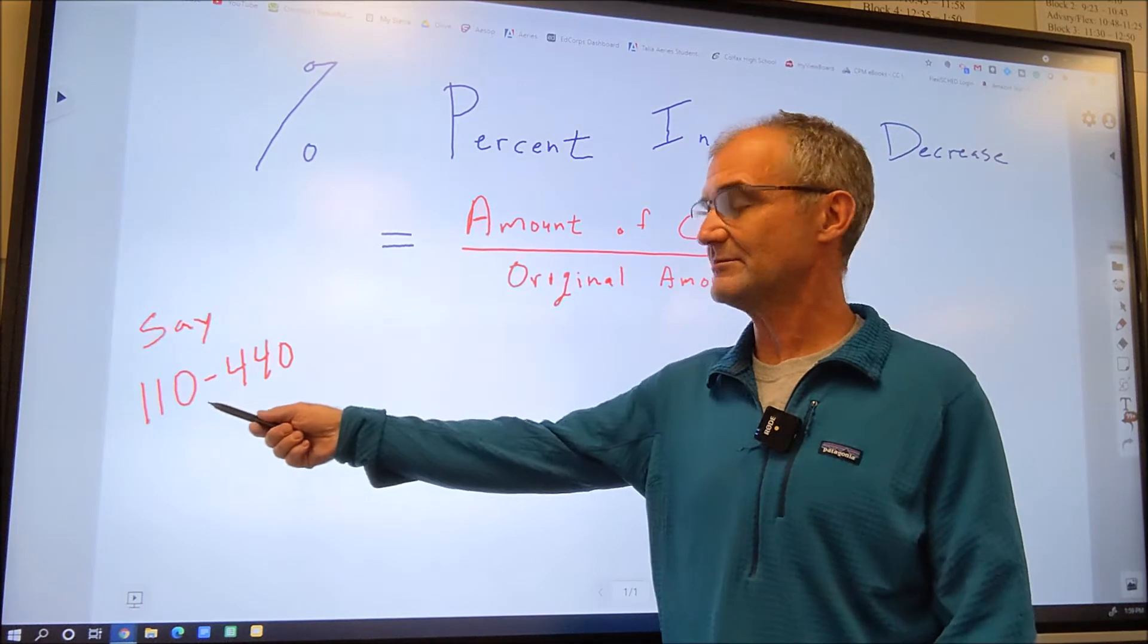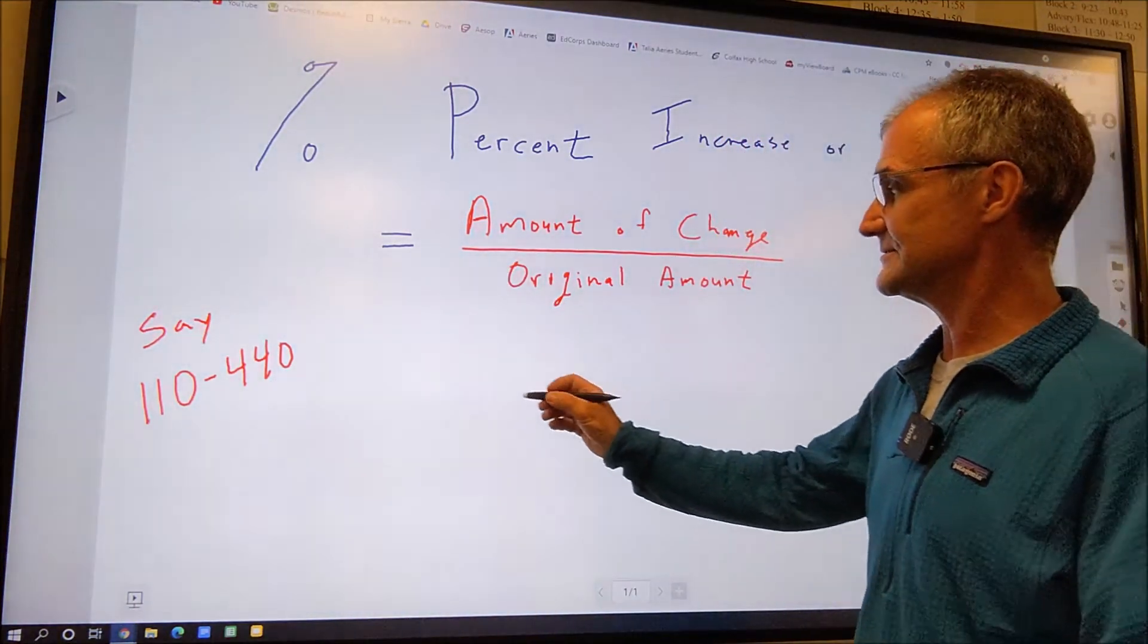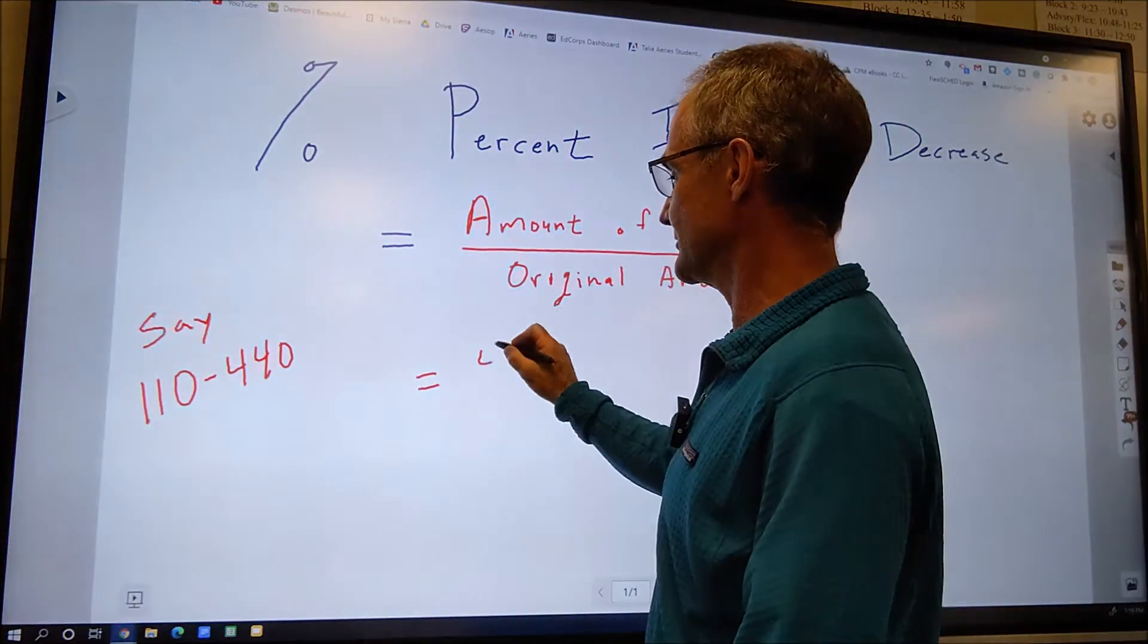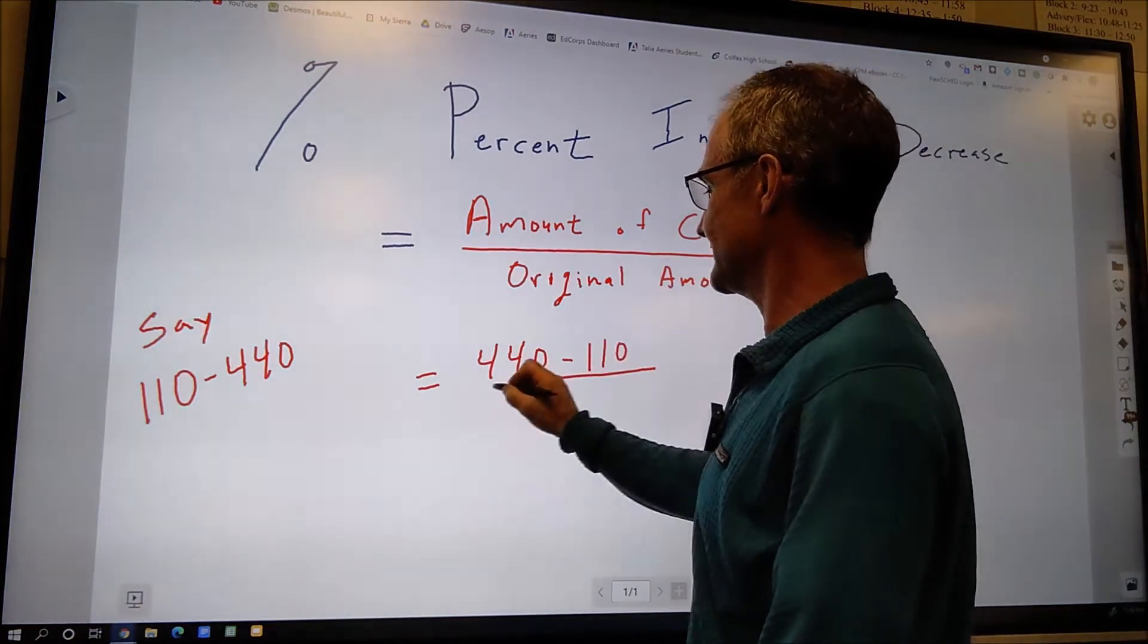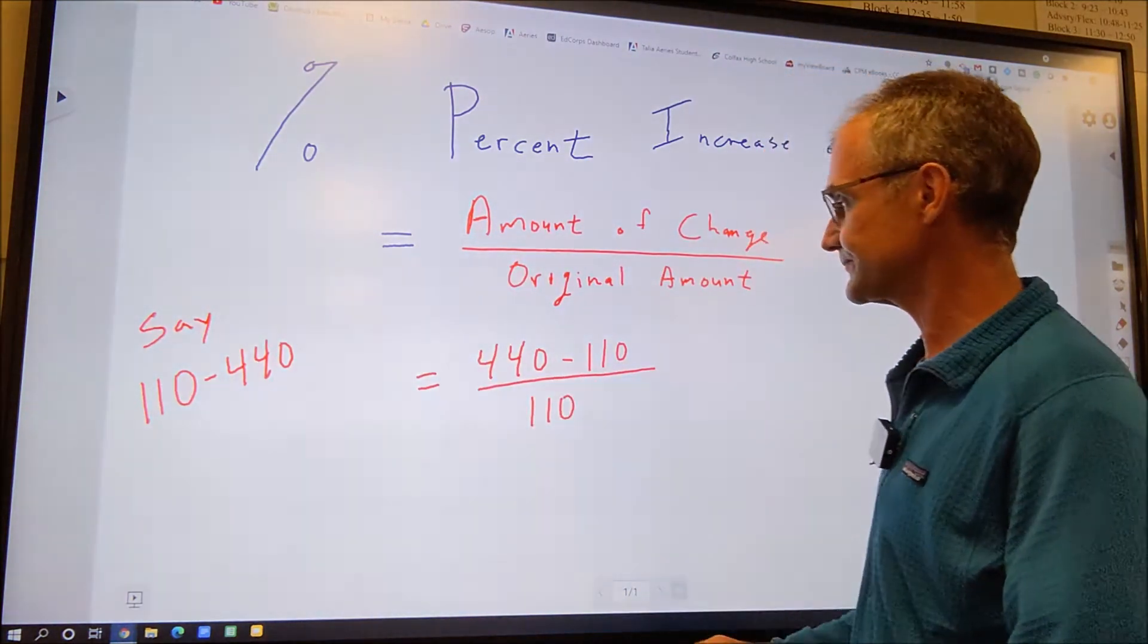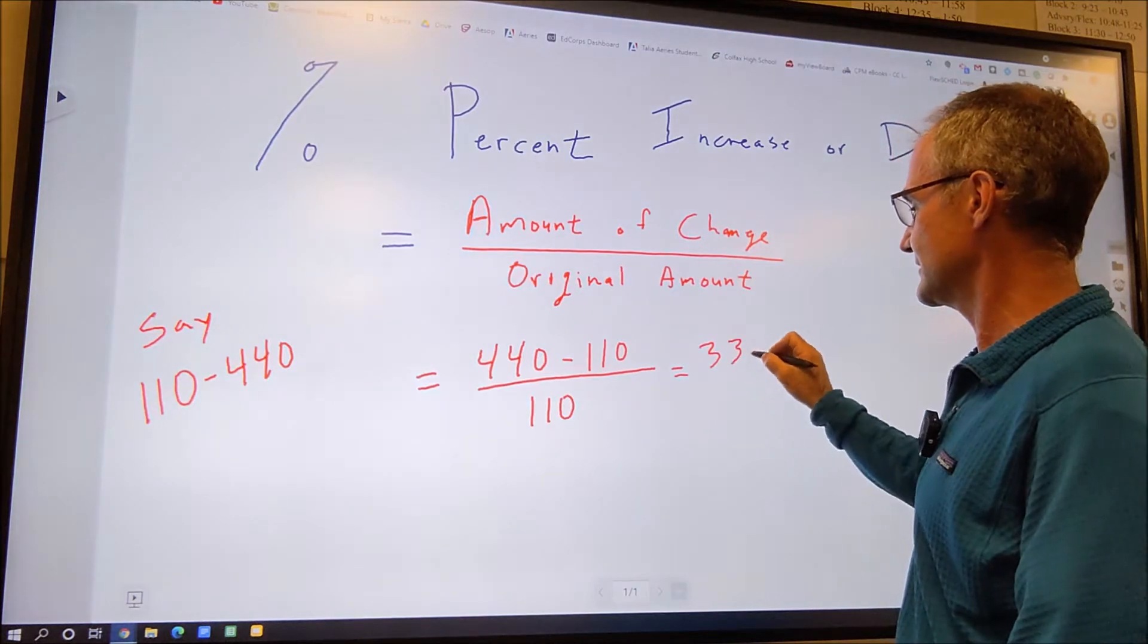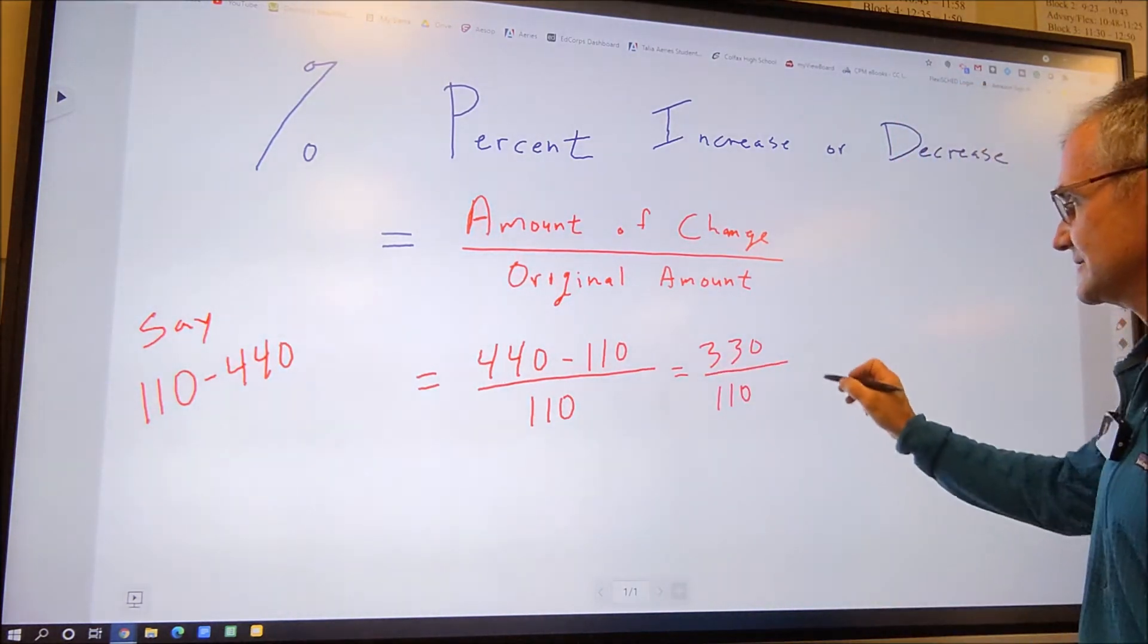The way I do this problem to go from 110 to 440, the amount of change is going to be the larger number minus the smaller number, 440 minus 110, divided by the original amount. So I started at 110, so I divide by that 110. 440 minus 110 is 330. So 330 divided by 110 is equal to 3.